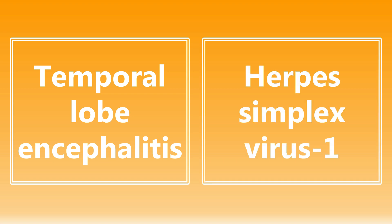Another really important one: temporal lobe encephalitis. The big association they want you to make here is going to be with HSV-1, herpes simplex virus type 1. Remember, with this temporal lobe encephalitis they may give you a patient that has altered mental status, aphasia, or frequent seizures. That particular location — the temporal lobe — they want you to be thinking about herpes simplex virus 1.